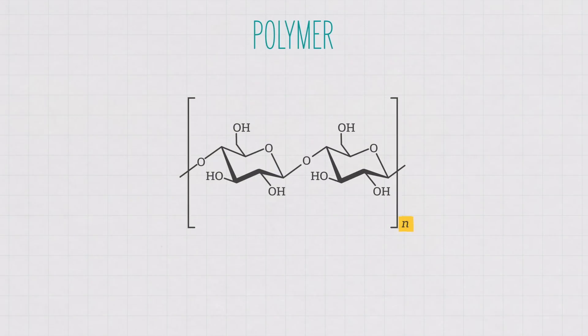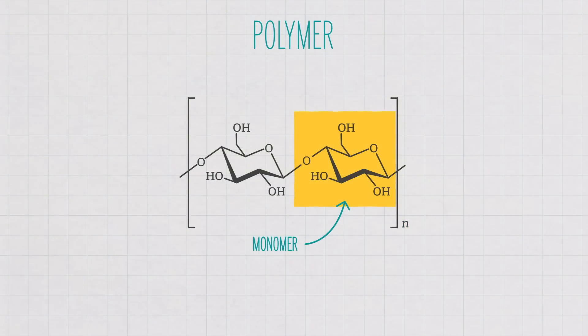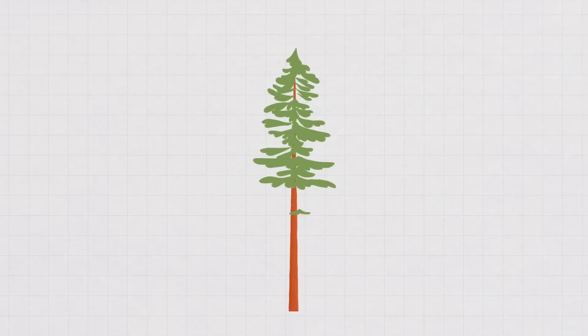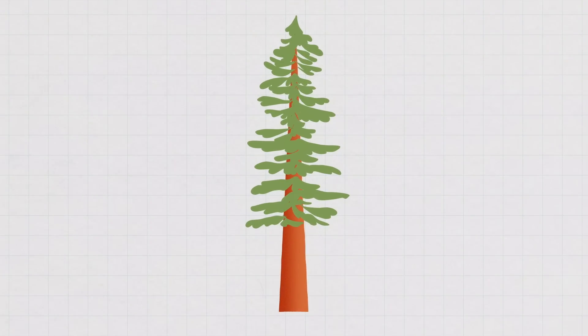This makes it a polymer, a molecule made up of lots of repeating units, or monomers. Here, the monomers are the glucose molecules. And if you want a tall tree, you're going to need a lot of cellulose. While it's made up of thousands of glucose molecules, it's still small when we think about things we can see.